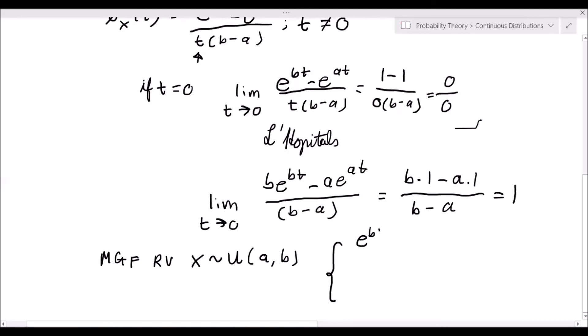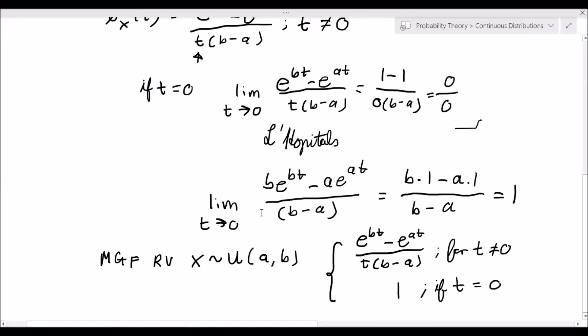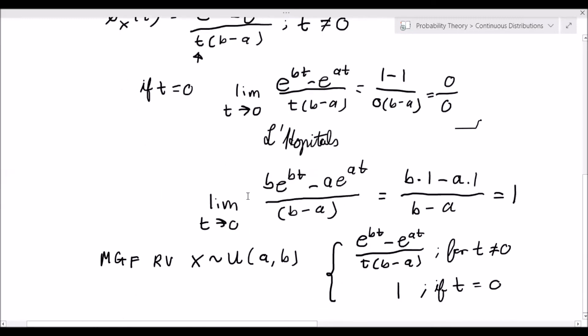e to the bt minus e to the at over t times b minus a for t not equal to zero, and it equals 1 if t equals 0. So that's how we derive the moment generating function for the uniform distribution. Thank you very much for watching. I hope this video has helped further your understanding of statistics.